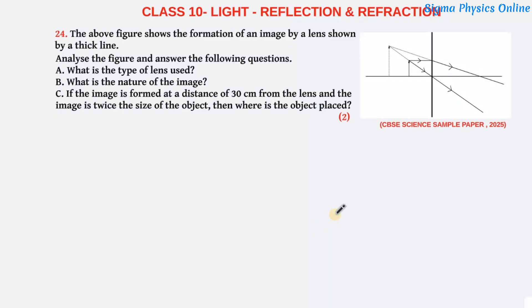The question is: the above figure shows the formation of an image by a lens as shown by a thick line. Analyze the figure and answer the following questions. What's the type of lens used? What's the nature of the image? And if the image is formed at a distance of 30 cm from the lens and the image is twice the size of the object, then where is the object placed?